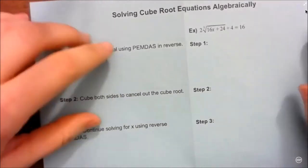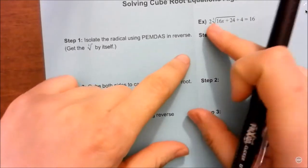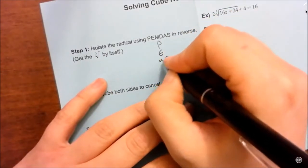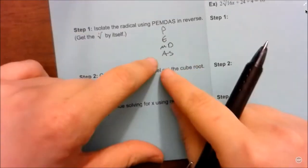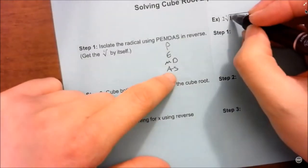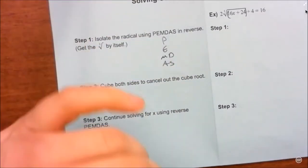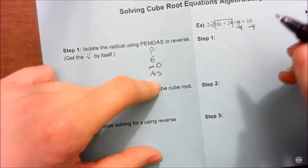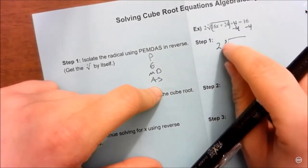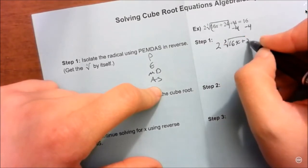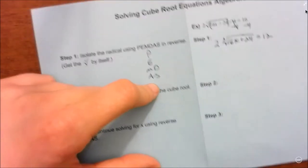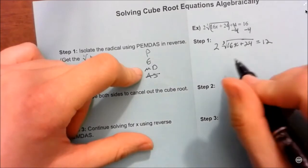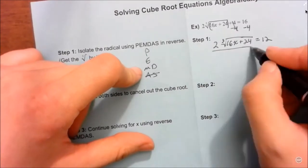Now let's do the cube root equation example. Even though you've never technically done this before, it's just a reverse PEMDAS problem. Start at the bottom — can I add or subtract anything that is not inside the cube root? The cube root acts as a grouping symbol like parentheses. I have a plus 4, so I subtract it from both sides. Then is there anything to multiply or divide outside the cube root? Yes — there's a times 2, so I divide both sides by 2.